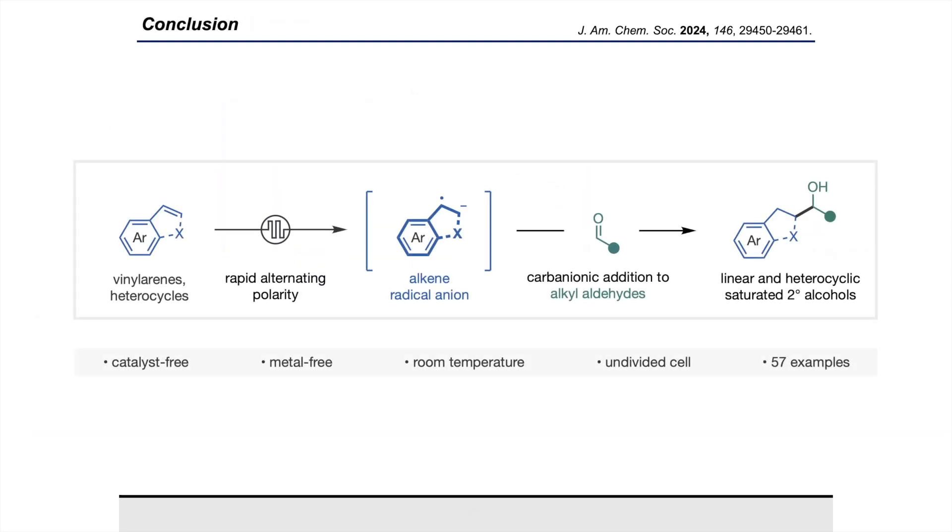So in conclusion, we've developed an intermolecular coupling reaction between vinylarenes or heteroaryls and alkyl aldehydes which uses rapid alternating polarity electrolysis as the linchpin to controllably access the radical anion intermediates generated from these olefins and direct their reactivity towards a nucleophilic addition to alkyl aldehydes. This approach is catalyst- and metal-free and occurs at room temperature in an operationally simple undivided cell. We showcase the generality of this approach across 57 examples.